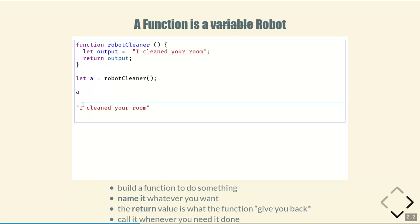One way to think about this is to forget what I said earlier about a function being a variable. It might be more helpful to think about a function as a piece of technology that you're building to perform some kind of task — a tiny little robot. So here I have built a function, I built a robot, and the thing I want the robot to do is to clean my room.